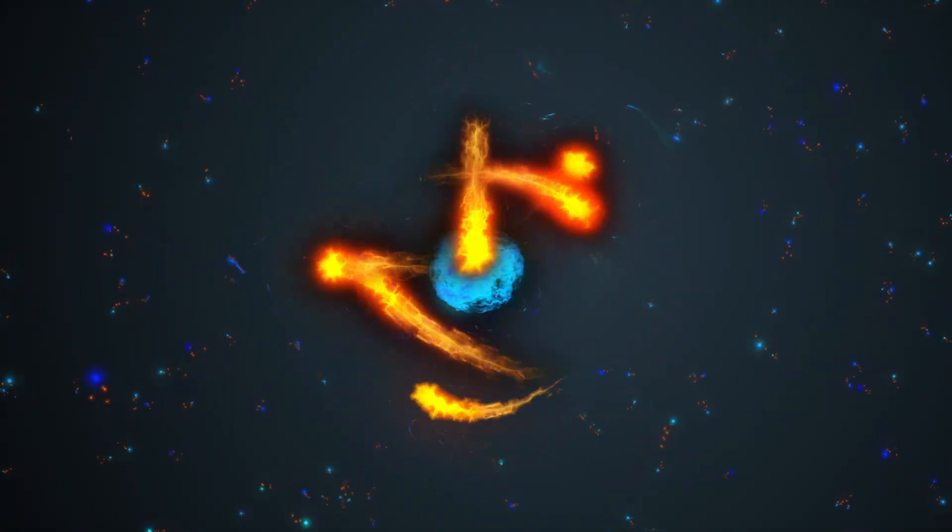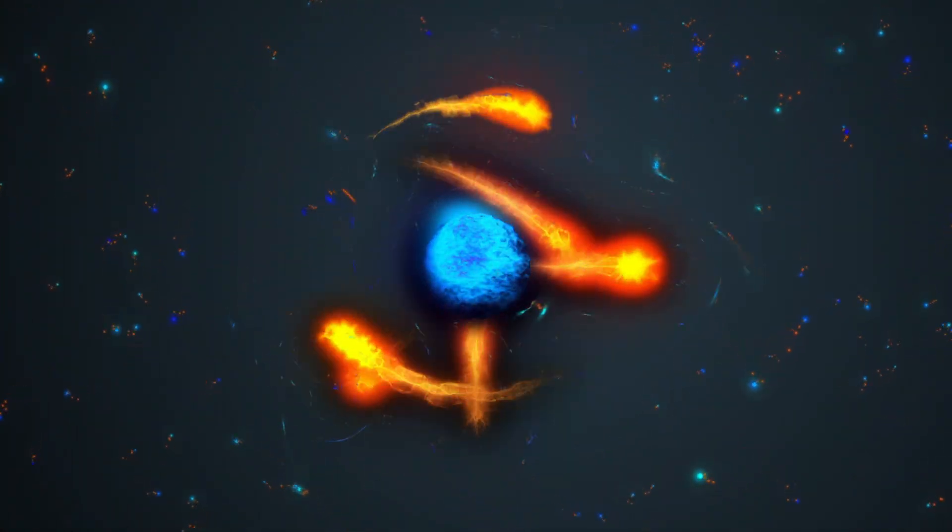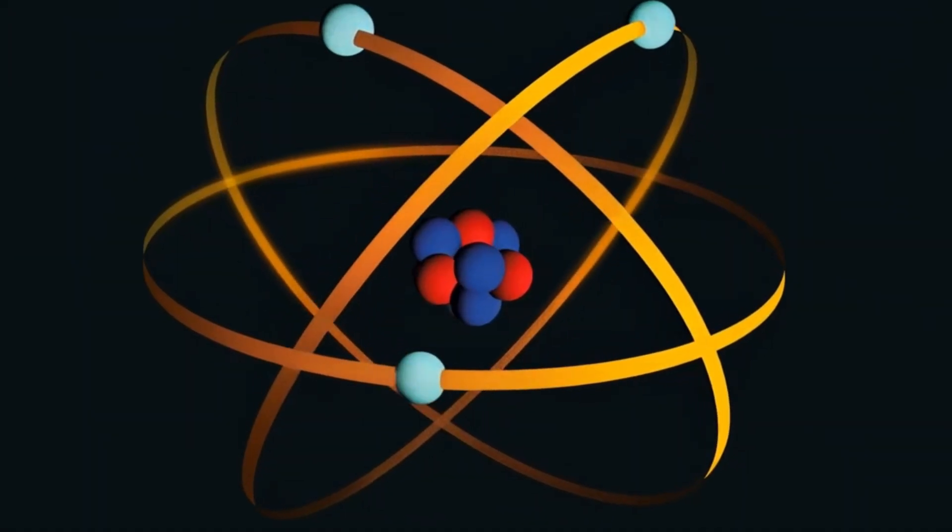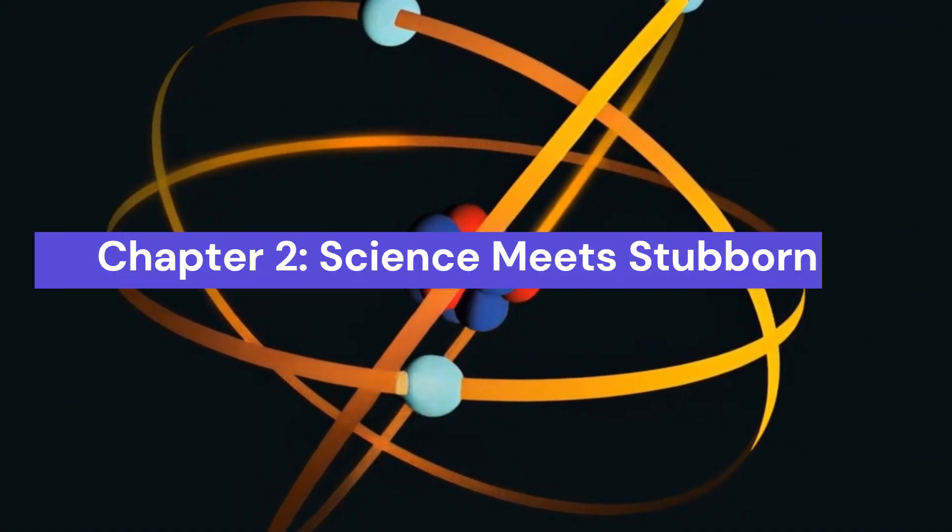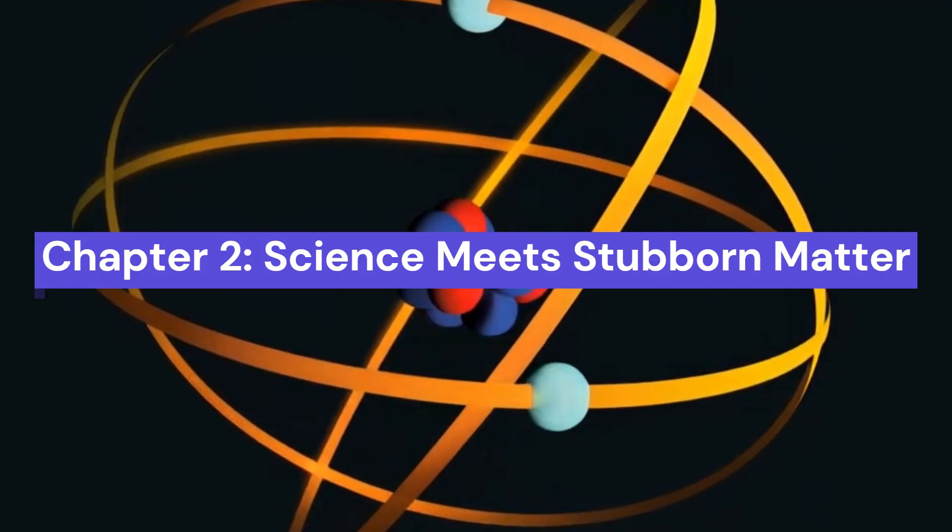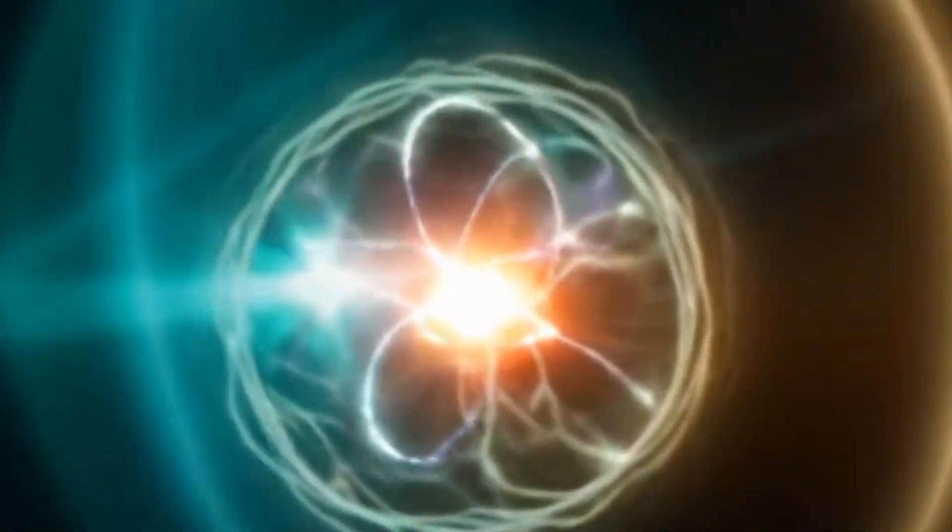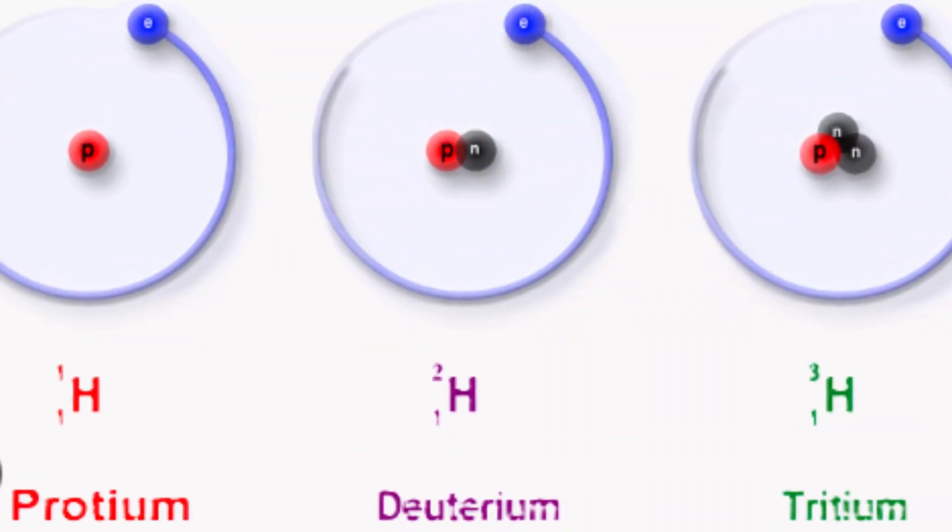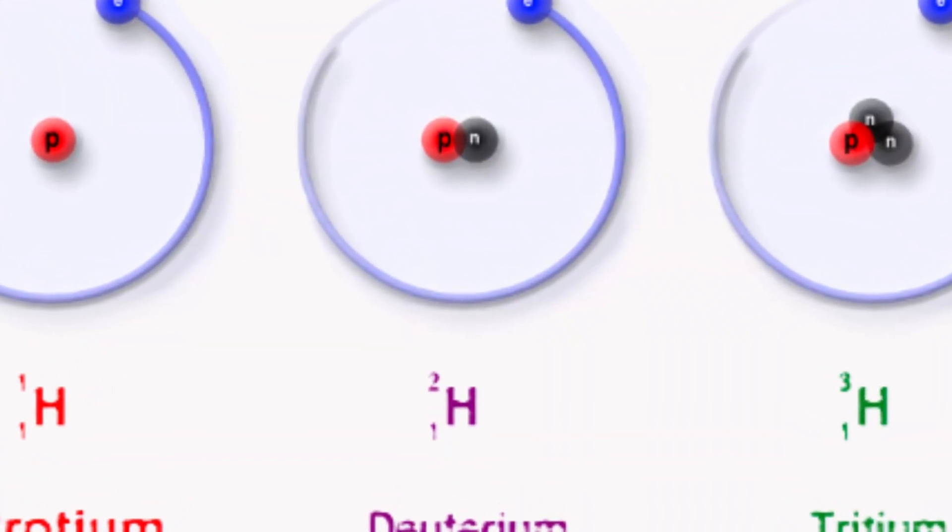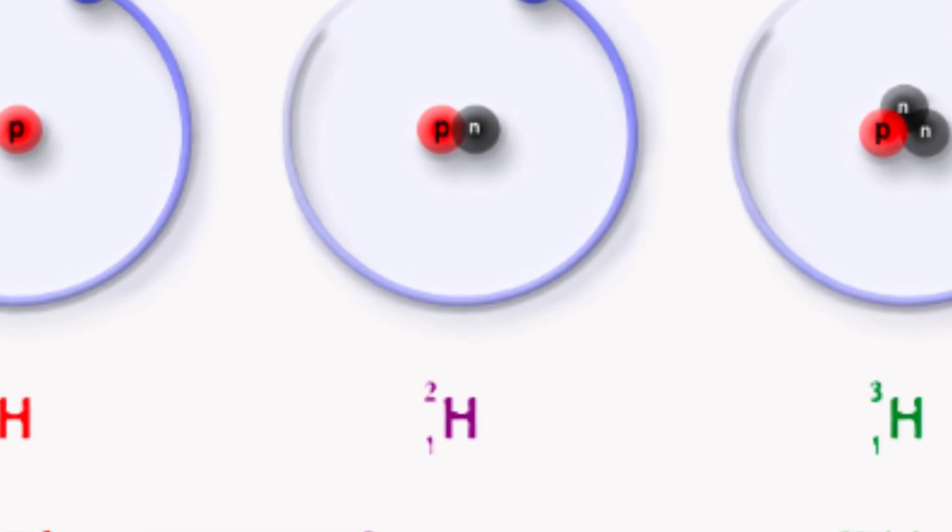And it all started with a beam of electrons, a slab of lithium, and a lot of scientific patience. Let's step back for a moment. Why is hydrogen-6 so hard to make? Atoms are made of protons and neutrons tightly bound together in a nucleus. The number of protons decides what element it is. Hydrogen always has one proton.